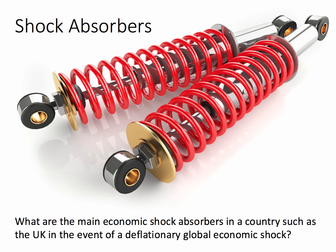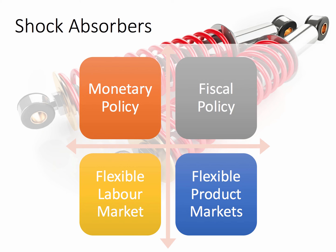When a country experiences a shock, the key question is its ability to absorb and respond to the shock. The Chinese slowdown is essentially a deflationary shock in terms of global demand and falling commodity prices, but to what extent can the economy absorb it? There are lots of ways shock absorbers can come into play — monetary policy, fiscal policy, and two more related to supply-side flexibility. If you've revised the three policies — monetary, fiscal, and supply-side — you'll get an idea of how countries can adapt and adjust when economic events happen.